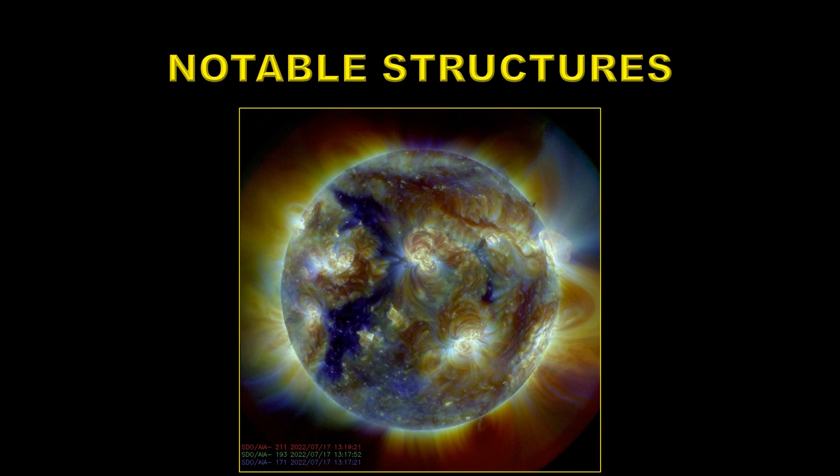There are some neat features on the sun at the moment. This is a compendium picture made up of three SDO AIA channels, 171, 193 and 211. The first thing you notice is this large dark area in the eastern hemisphere which is a large coronal hole stretching almost from limb to limb.